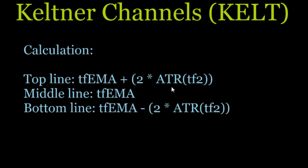So how do we actually calculate these? It comes in three lines. The top line is your time frame EMA — we're using a 20-period EMA — plus two times the ATR using a secondary time frame, which we'll set to 10. The middle line is simply the exponential moving average for that time frame. The bottom line is that EMA minus two times the ATR of the second time frame. You can use 20-20, 10-10, 50-50, or whatever parameters you prefer.